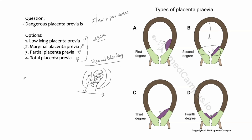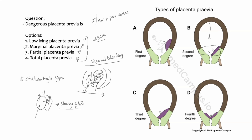There is one important sign used to diagnose dangerous placenta previa — Stalwortis sign. In dangerous placenta previa, the fetal head is lying on the placenta. When you push the head back into the pelvis as a maneuver, this compresses the placenta and placental circulation, which in turn compresses the umbilical cord attached to the placenta. This umbilical cord compression leads to fetal distress and slowing of the fetal heart rate — bradycardia. This sign is known as Stalwortis sign.